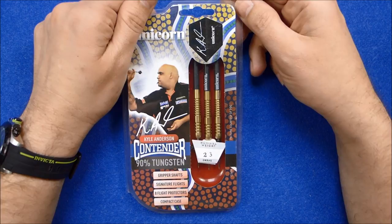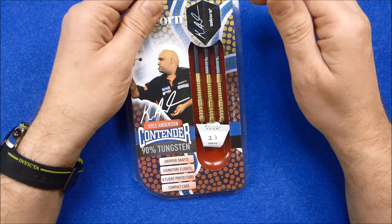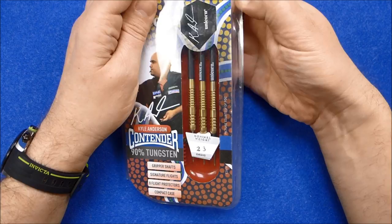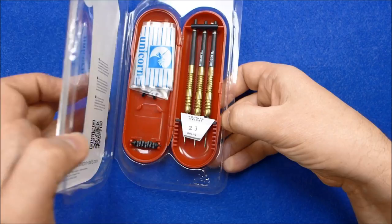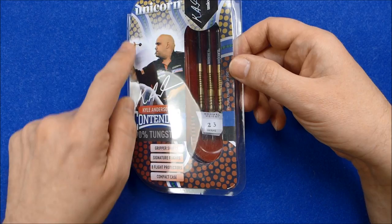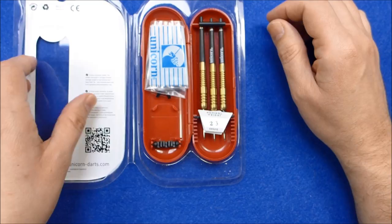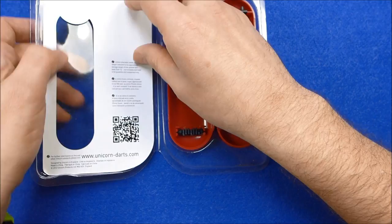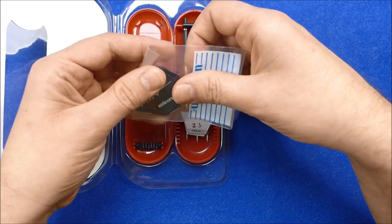As you can see it comes in the normal clamshell packaging and these are 90% tungsten darts, 23 grams. They retail for around £39 and on the front of the pack there's some kind of Aboriginal graphic, not sure if it has any cultural significance or whether it's just a standard design.